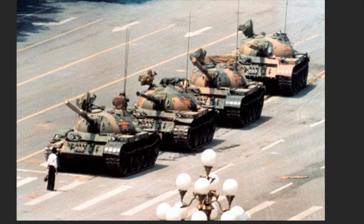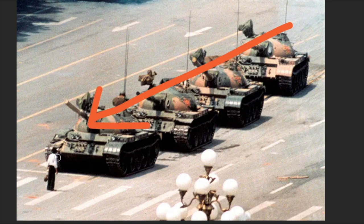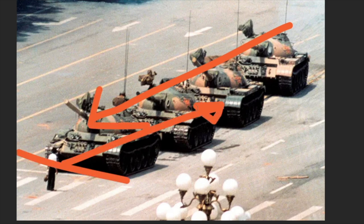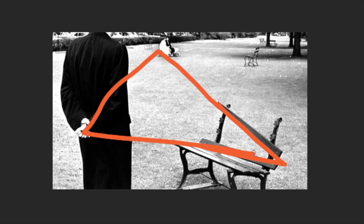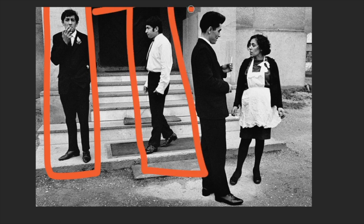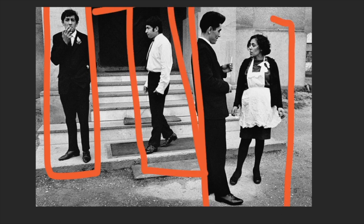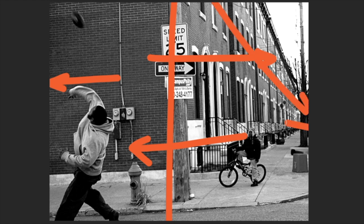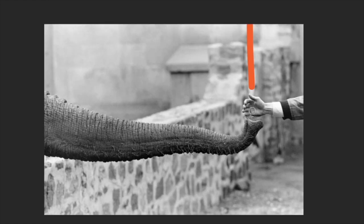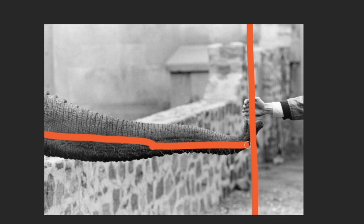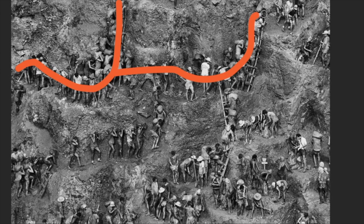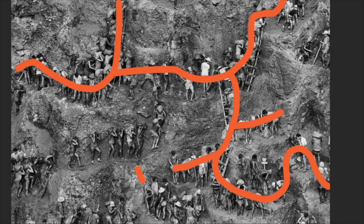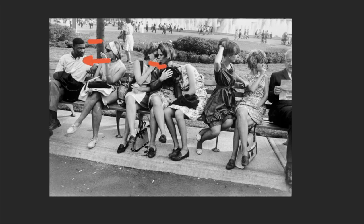Through examples I hope to show how the conventions of composition can contribute to making strong photographs, but also how these conventions can be broken. If one follows rules or conventions too closely, your photographs will end up being sterile or boring, but it's a useful exercise to study images in order to investigate how the photographer has constructed the image to create form or balance.